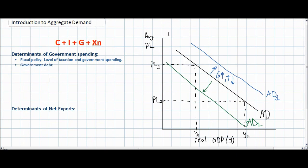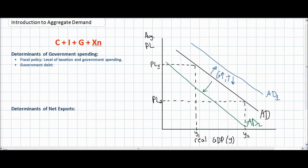If a government goes into debt, this could increase aggregate demand in the short run. However, just like household debt, if a government has too much debt over time it will have to pay off that debt, requiring taxes to be raised and government spending to decrease. Therefore, government debt is another determinant of government spending and therefore aggregate demand.